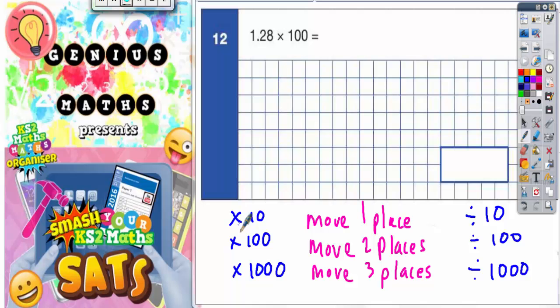Now if you're multiplying, you've got to move the digits forwards, in other words that would be this way. You're moving the digits forwards to make the number bigger. So if you're multiplying by 10, you move the digits one place to the left.